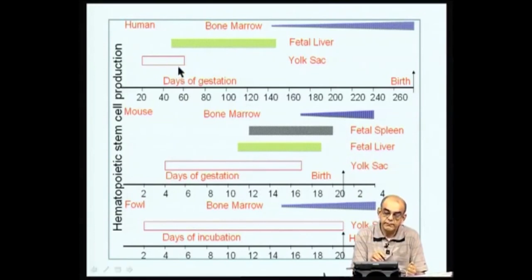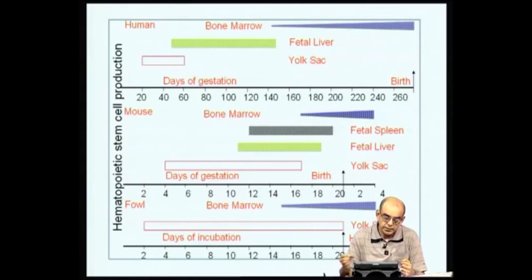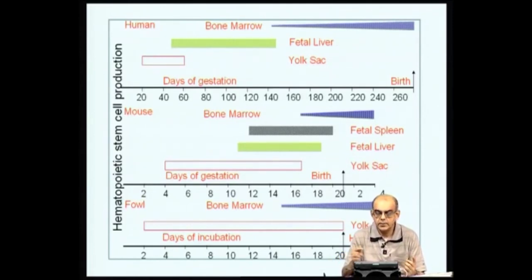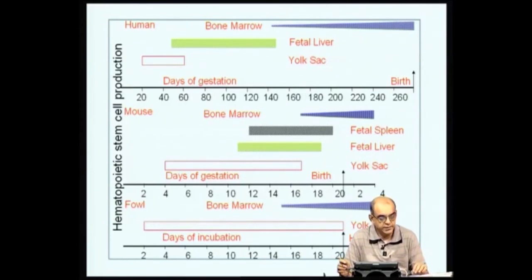In humans, the fetal liver plays some role in addition to the yolk sac. Finally, the bone marrow takes over the function of hematopoietic stem cell production after birth. These are the approximate timetables involved in hematopoietic stem cell production. This slide is included to tell you that, in addition to the bone marrow, other organs do play a part in hematopoietic stem cell production earlier on during gestation.